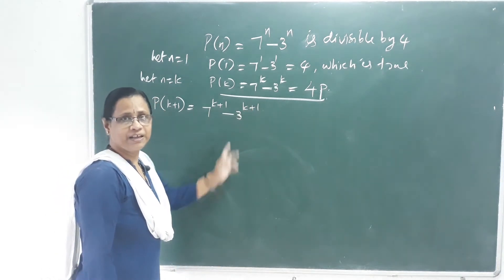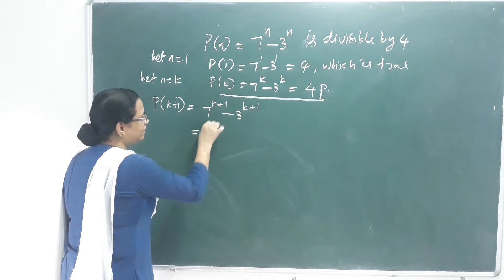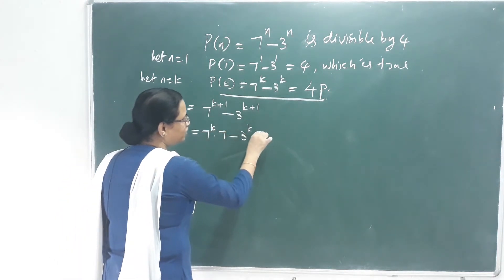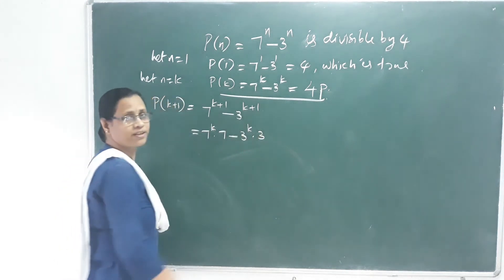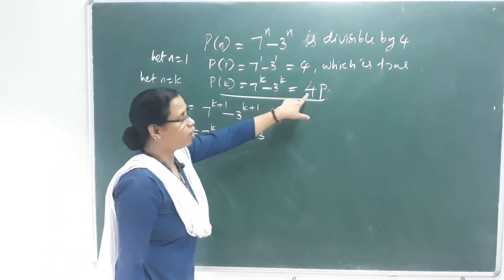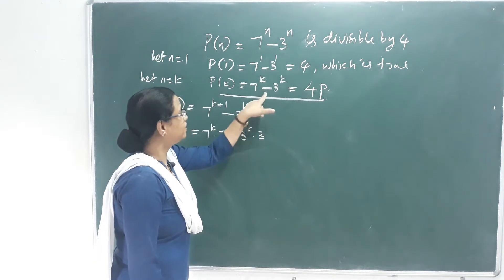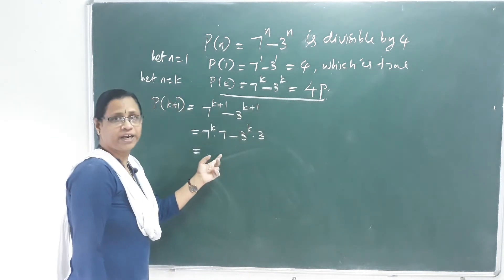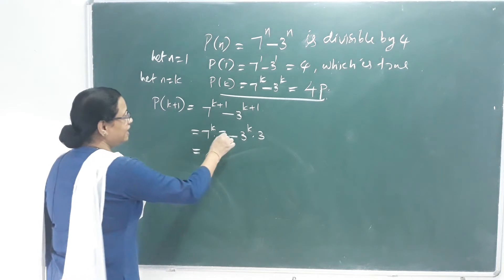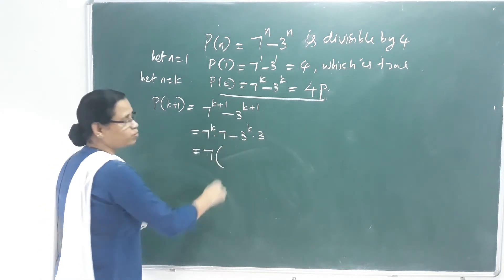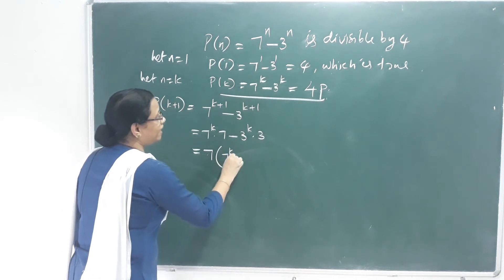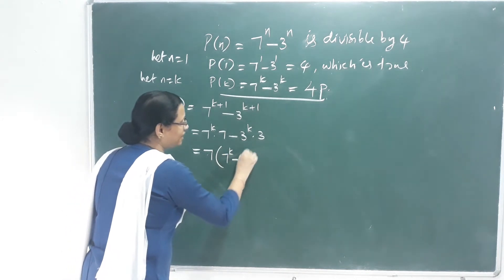This equals 7 raised to k into 7 minus 3 raised to k into 3. Substituting, we have 7 raised to k minus 3 raised to k, with 7 outside.